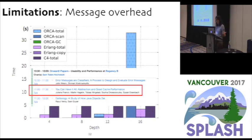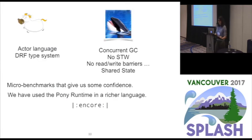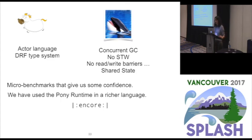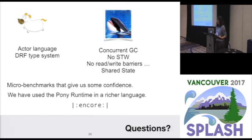We currently have an optimization that avoids tracing of immutable data structures upon message sending, and we get really good performance on that. For mutable ones, I'm going to talk about that tomorrow at Onward — so if you are interested, please join us. To wrap up: Pony is an actor language that uses its type system and message passing to help the garbage collector achieve fully concurrent and pause-less garbage collection while allowing shared state among different actors. We have run several micro-benchmarks giving us confidence, and we are also proud that Orca has been implemented in a richer language, Encore, which has a completely different type system — and it still works. Thank you very much, and I'll take questions.